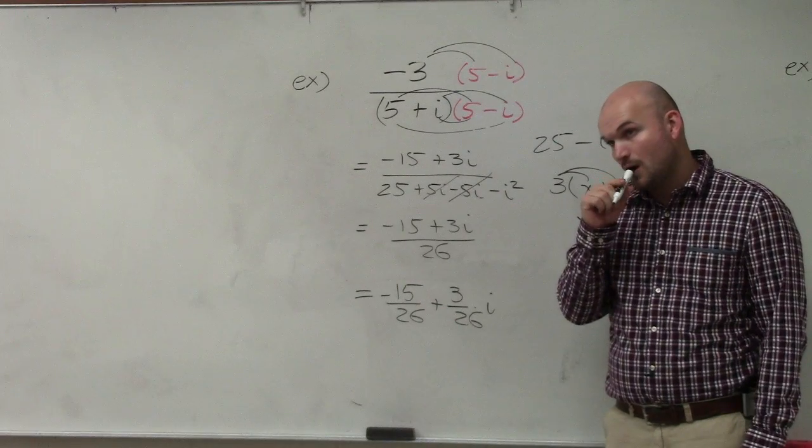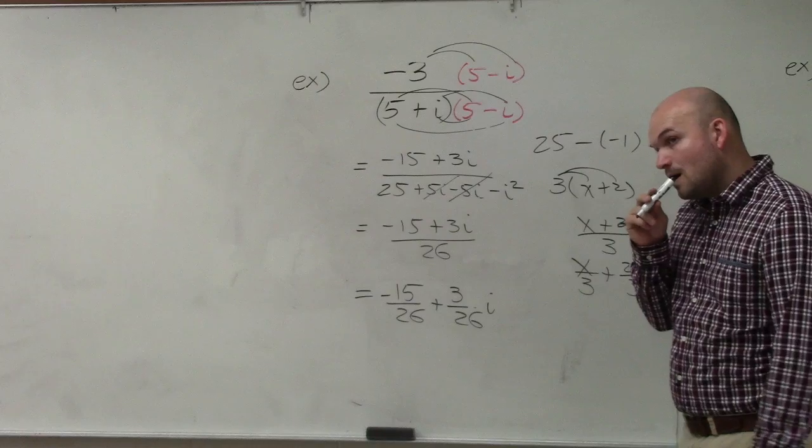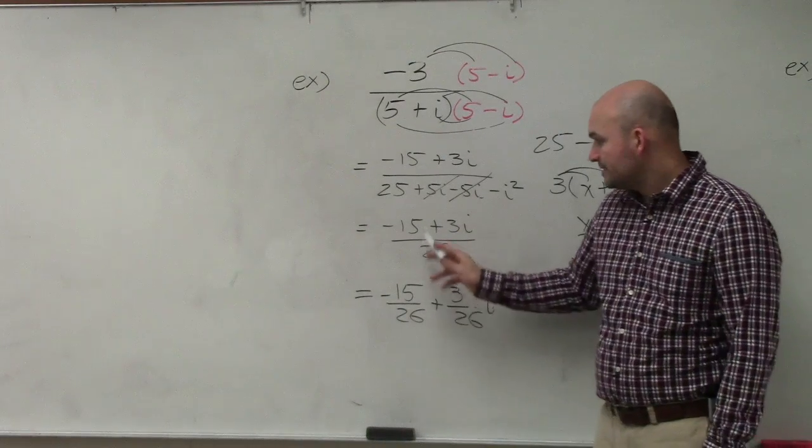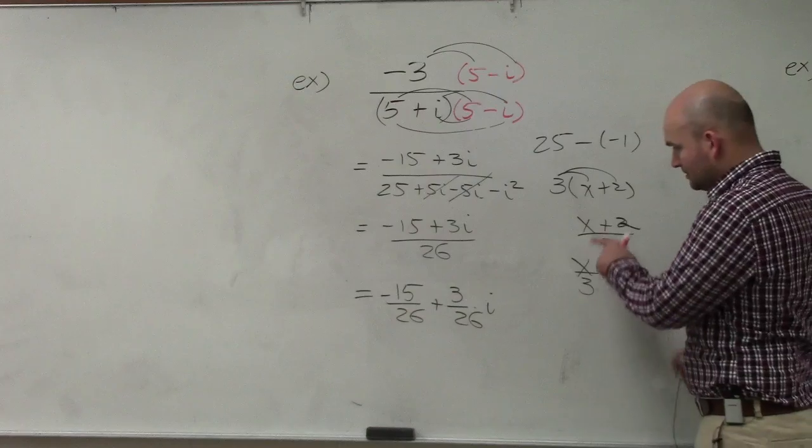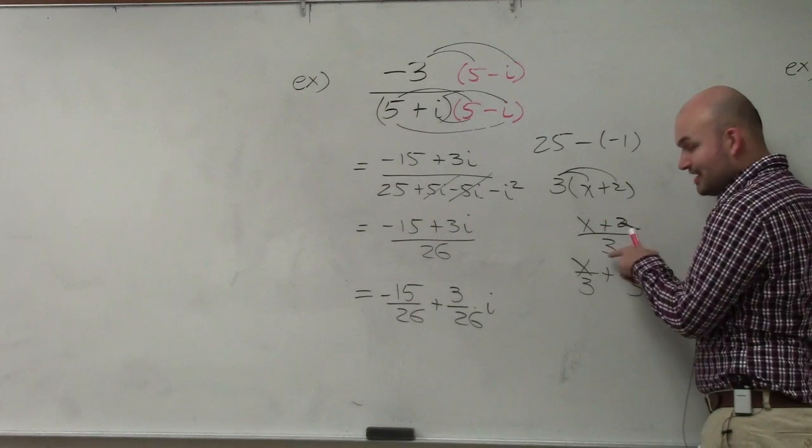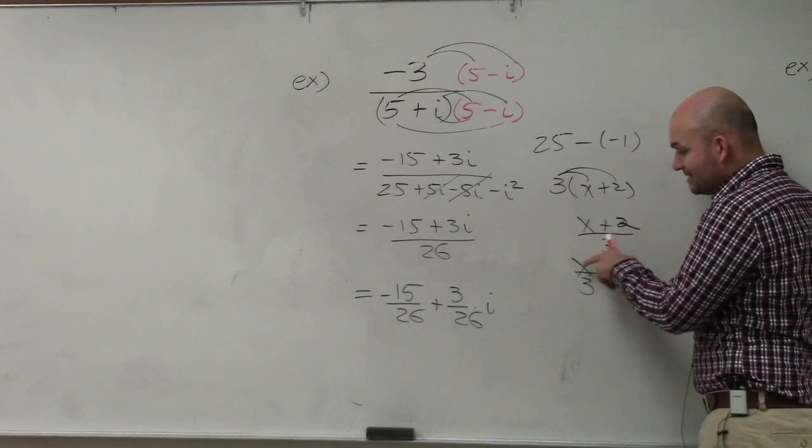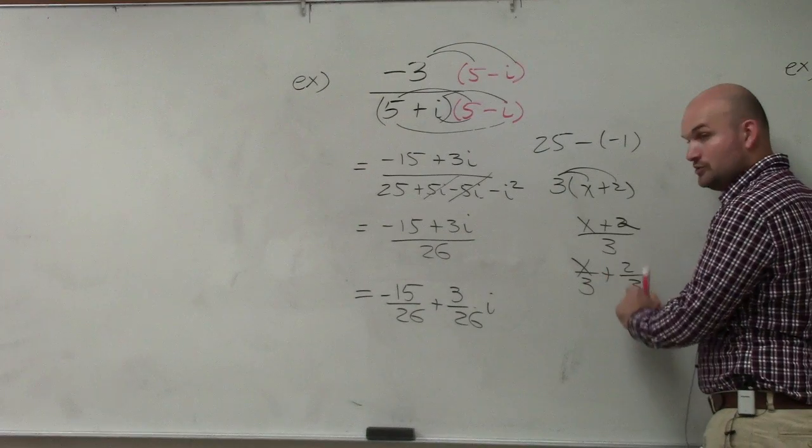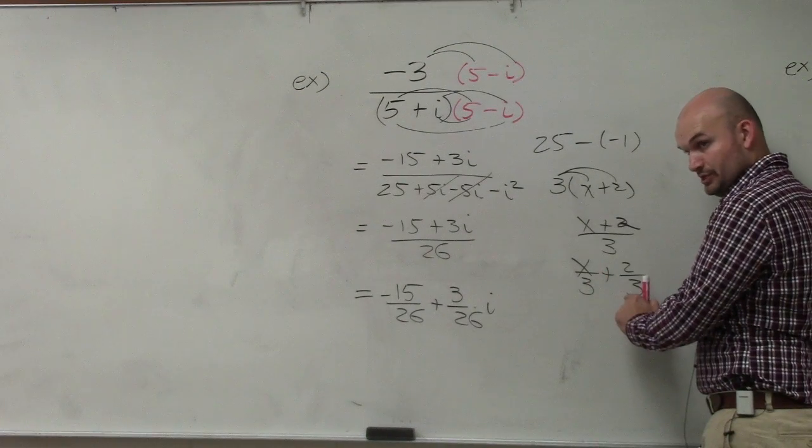How did you get negative 15 over 26? Look at over here. x plus 2 divided by 3, you can rewrite that as x divided by 3 plus 2 divided by 3. Do you understand that?